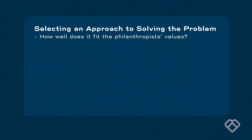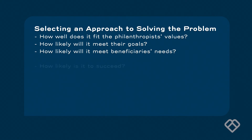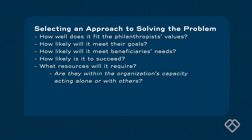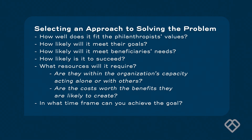Based on the brainstorming and on your social science research, you now have a number of possible strategies for dealing with homelessness in your city. How are you going to decide among them? Consider these criteria: How well does it fit the philanthropist's values? How likely will it meet their goals? How likely will it meet the beneficiary's needs? How likely is it to succeed? What resources will it require? Are they within the organization's capacity, acting alone or with others? Are the costs worth the benefits they are likely to create? And in what time frame can you achieve the goal?